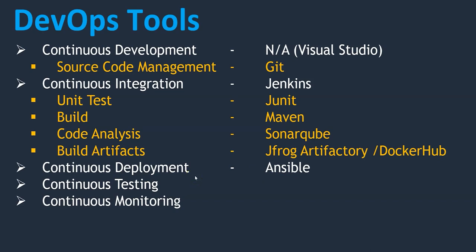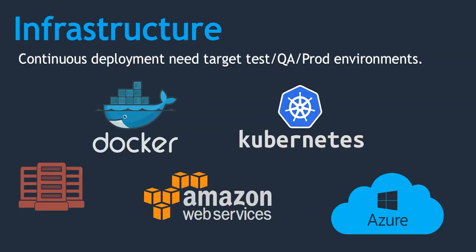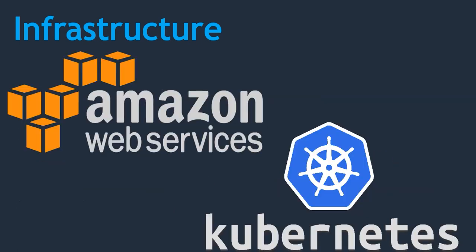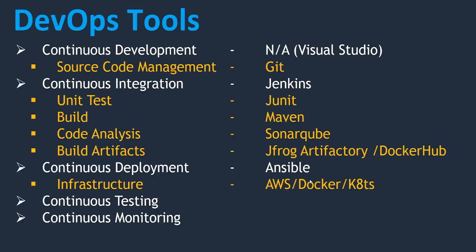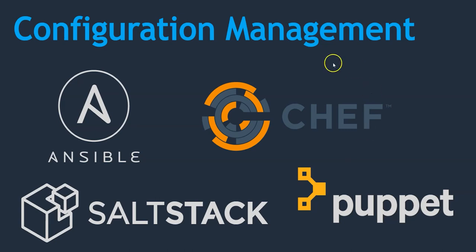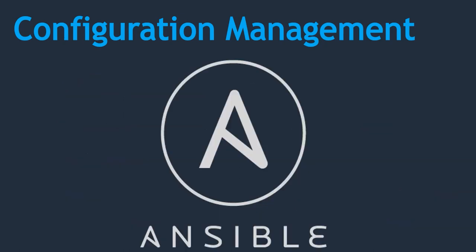Under continuous deployment, infrastructure also comes in — because we need infrastructure to deploy our applications. Infrastructure options include Docker, Kubernetes, traditional data centers, Amazon Web Services, Azure, or GCP. Among these, we are going to use AWS and Kubernetes. Teaching AWS fully is not in scope, but we'll deploy on it. We'll also use Docker and Kubernetes later. For configuration management tools — Ansible, Chef, SaltStack, Puppet — we are again using Ansible.